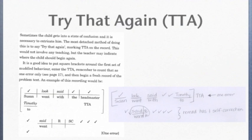The part below it is what the child says on the second time through: Susan said, went with the headmaster too. Notice she self-corrected the word went and therefore in the second time through, there are no errors. It is just one self-correction. Try that again is not used that often, but when you have a student who is completely muddled, sometimes they just need that extra chance.